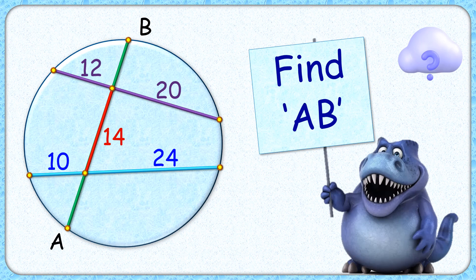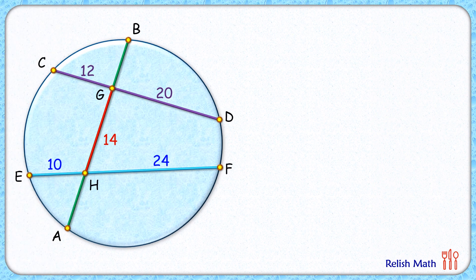Welcome to this interesting question. Given is a circle with three chords. The purple and blue chord is getting intersected by chord BA. The exciting part is, with these given dimensions, we have to find the length of chord AB. Let's check this simple solution.